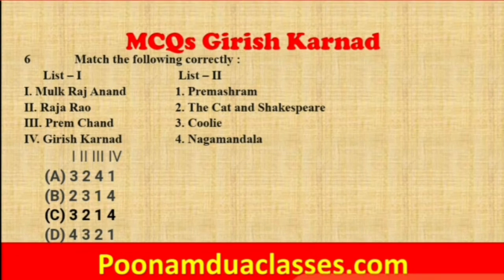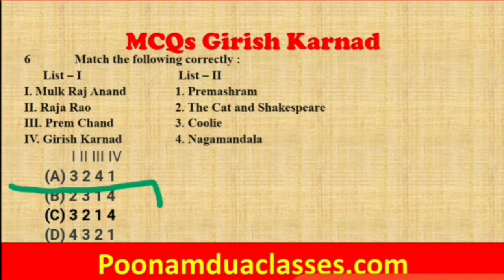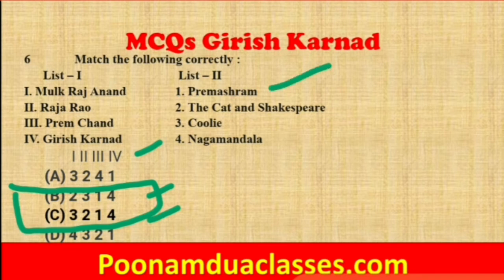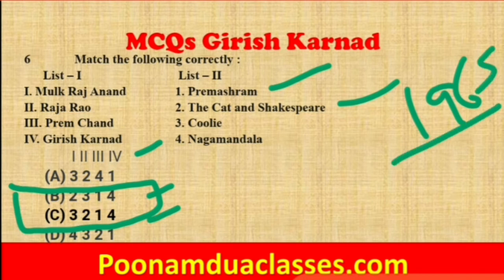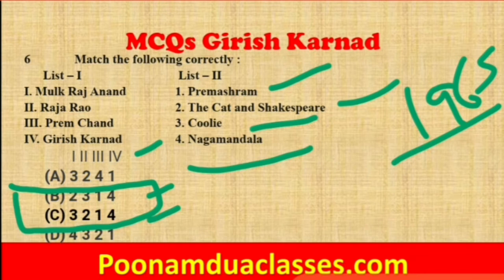The next question involves matching texts with authors: Mulk Raj Anand, Raja Rao, Prem Chand, and Girish Karnad are to be matched with Prem Ashram, The Cat and Shakespeare, Coolie, and Nag Mandala. Nag Mandala matches Girish Karnad. Prem Ashram was written by Munshi Prem Chand — the first Hindi novel based on a farmer's life. The Cat and Shakespeare is a novel by Raja Rao written in 1965. Coolie is a novel by Mulk Raj Anand from 1936. So option C is the correct answer.